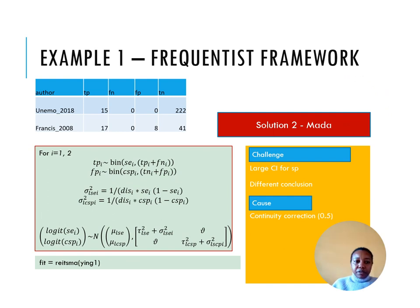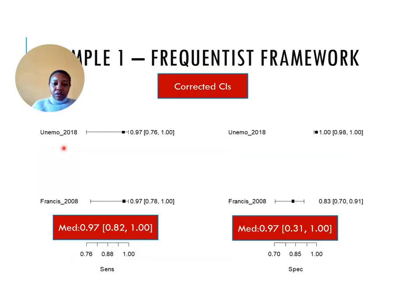We can remove the zeros by adding 0.5 to the counts and then refit the model using the function reitsma with just the name of the dataset. Here is the resulting forest plot. The confidence intervals are for sure shorter, but the point estimates are different compared to metaphor.